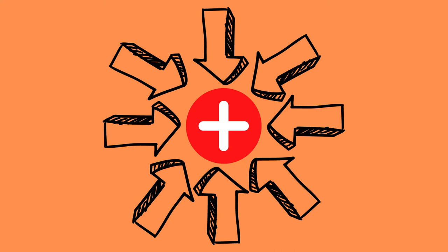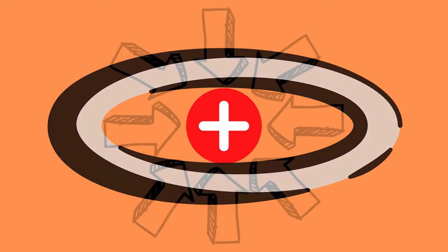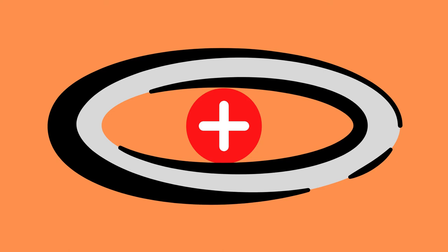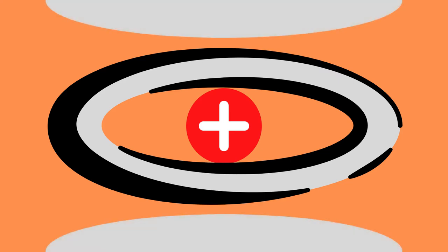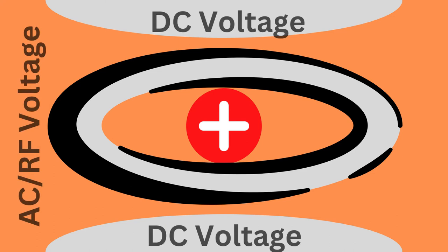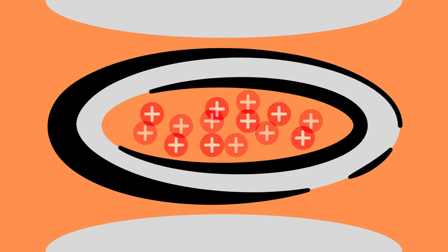This is done by placing one ring of AC voltage, or radio frequency voltage, around it so that the ion stays in the middle, as well as two static DC voltage plates forcing the ion to stay in the middle due to repulsion, both on the X-plane and on the Y-plane.